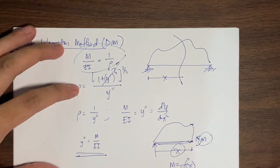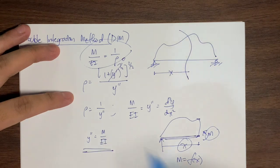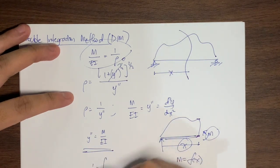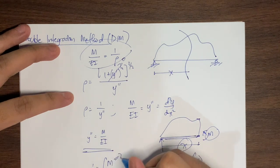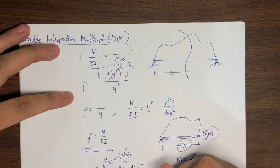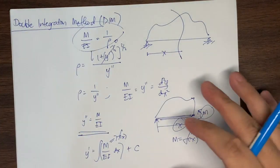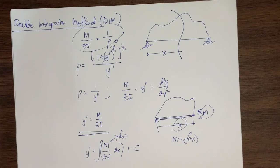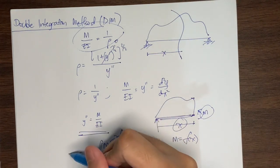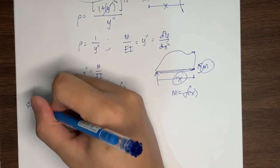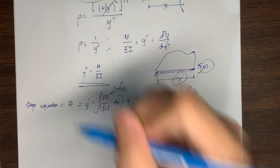Since the moment is a function of x, we can integrate both sides of the equation. Integrating y double prime = M over EI gives: y prime equals the integral of M over EI dx plus an arbitrary constant C. In differential calculus, y prime, or the first derivative of a function, is the slope of the curve at that point. So y prime denotes our slope equation.